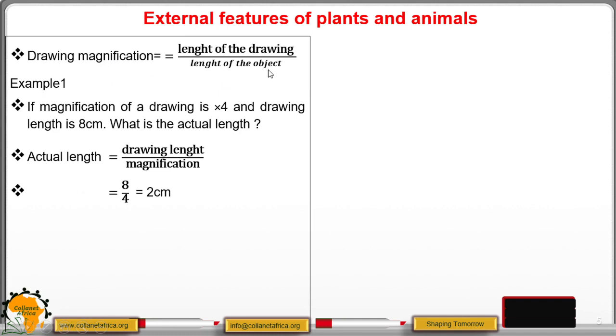At that time maybe you will have been provided with the length of the drawing and even the length of the object. So you can try as many examples as you can to give you a better understanding. Now we move ahead and look at external features of plants and animals.